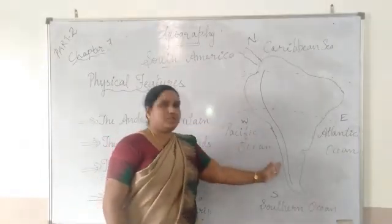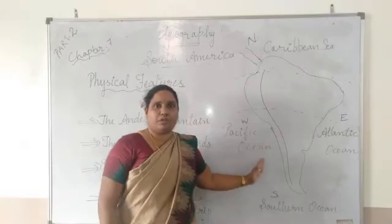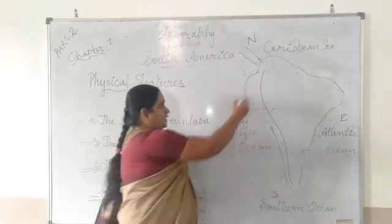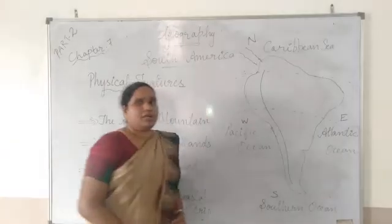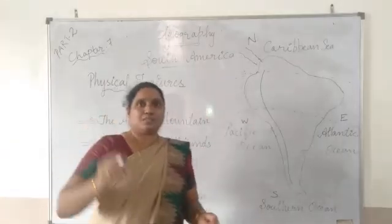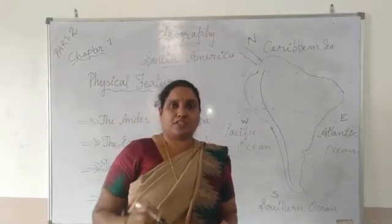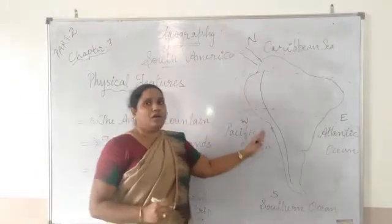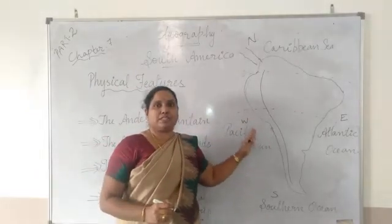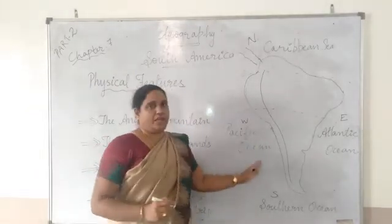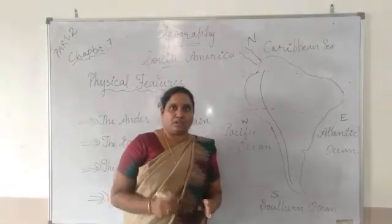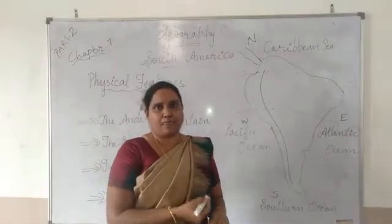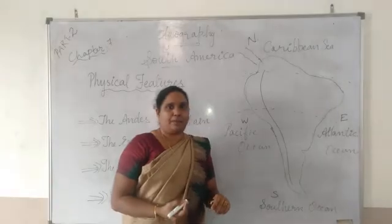The western side of South America is the Andean Cordilleras. You can see it here — it runs from north to south. This part comes under the Pacific Ring of Fire, so we can see many volcanic mountains in this area. It is a place where volcanic eruptions happen.